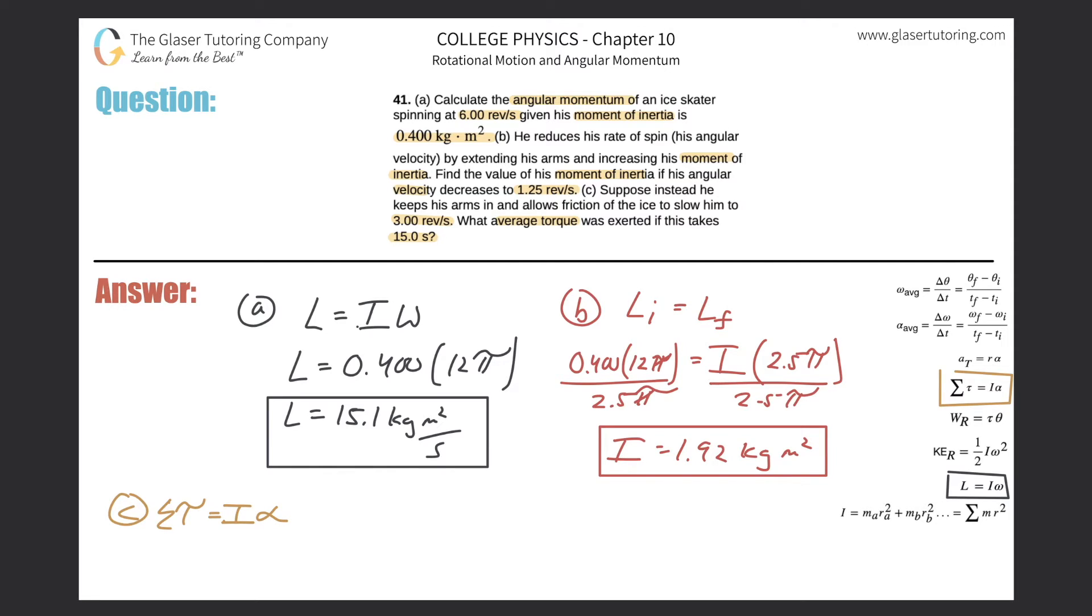So I start with this formula now. So I know that the sum of the torques, aka the average torque, would equal the moment of inertia multiplied by the angular acceleration. Now they told us that his arms were in and therefore the moment of inertia here is going to be the same as the first part of 0.4. So we know that. And now how about the angular velocity? Well, excuse me, I mean the angular acceleration.